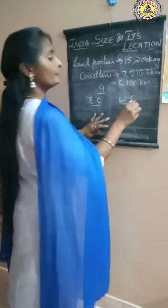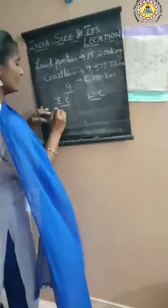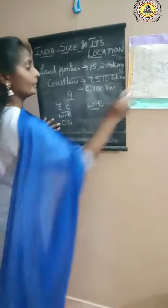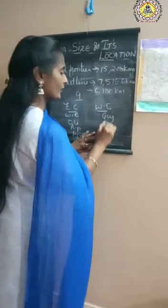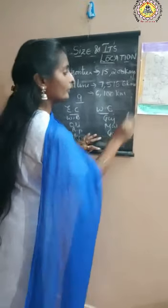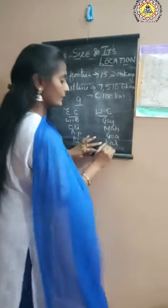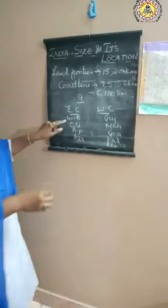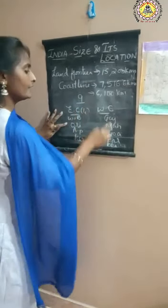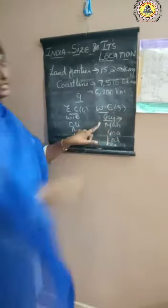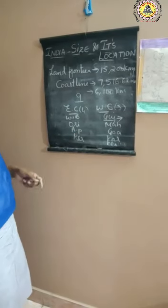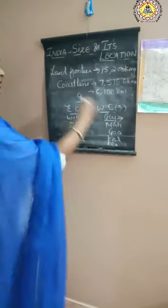The East Coast states are: West Bengal, Odisha, Andhra Pradesh, and Tamil Nadu. The West Coast states are: Gujarat, Maharashtra, Goa, Karnataka, and Kerala. So there are 4 states on the East Coast and 5 on the West Coast, totaling 9. Among all these, the largest coastline is held by Gujarat.